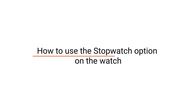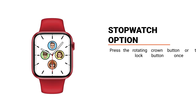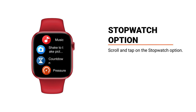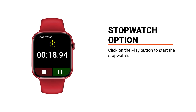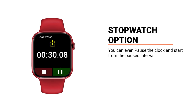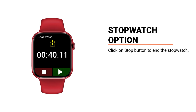How to use the stopwatch option on the watch: press the rotating crown button or the lock button once to open the menu. Scroll and tap on the stopwatch option. Click on the play button to start the stopwatch. You can even pause the clock and resume from the paused interval. Click the stop button to end the stopwatch.